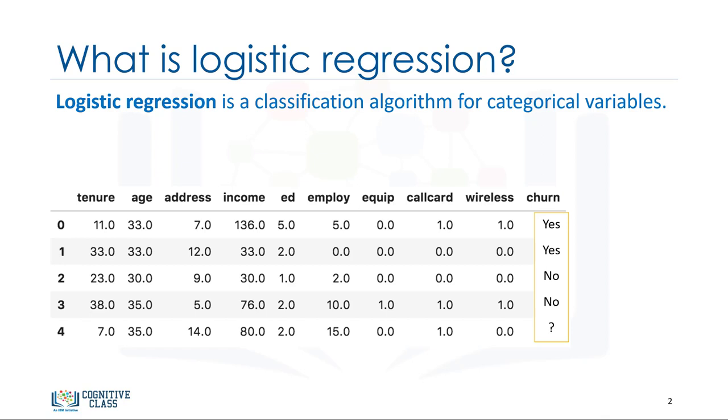This is historical customer data where each row represents one customer. Imagine that you're an analyst at this company, and you have to find out who is leaving and why. You'll use the data set to build a model based on historical records and use it to predict the future churn within the customer group. The data set includes information about services that each customer has signed up for, customer account information, demographic information about customers like gender and age range, and also customers who've left the company within the last month. The column is called churn.